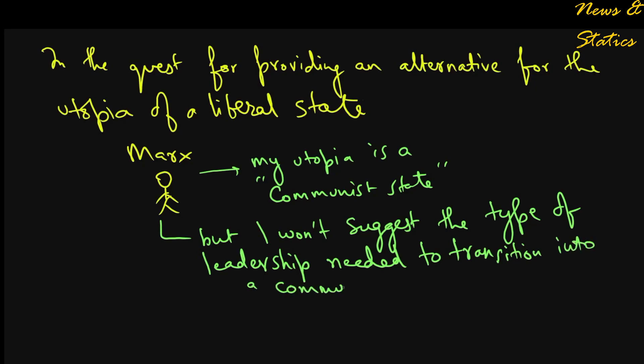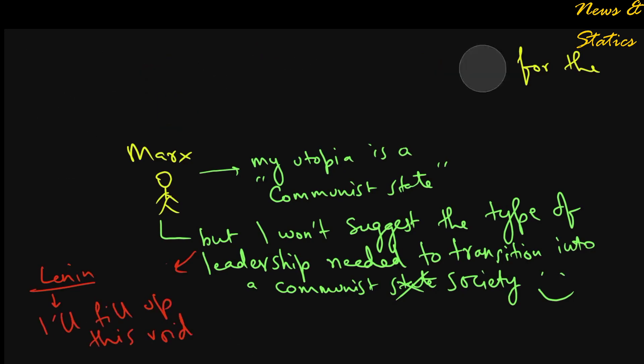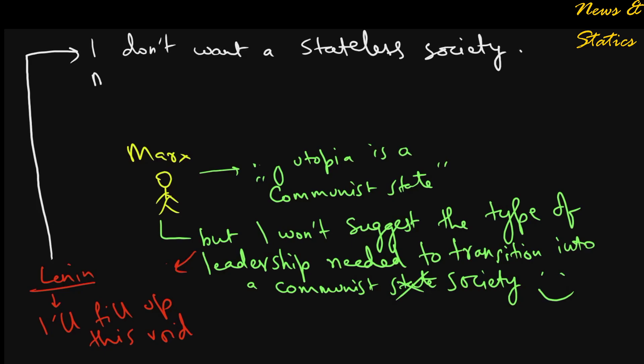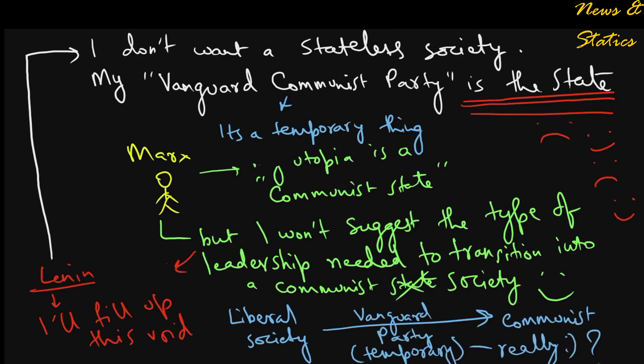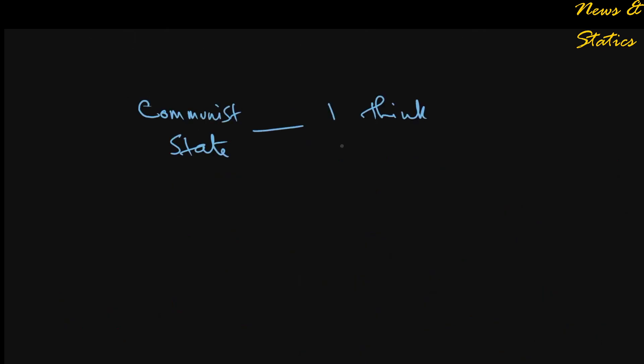This void in Marxism was filled up by Lenin when he violated the basic tenet of a stateless society by creating an all-powerful state in the name of a vanguard communist party. A concept which was considered as a temporary bridge to transition into a stateless system, but has hardly any intention of being temporary in any communist regime of the world. In fact, Marx would have regarded the phrase communist state to be an oxymoron.